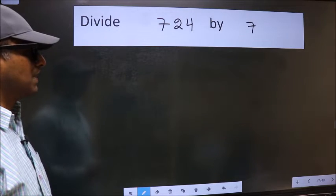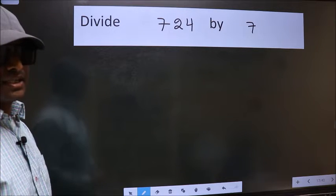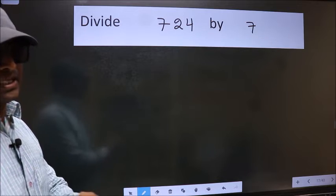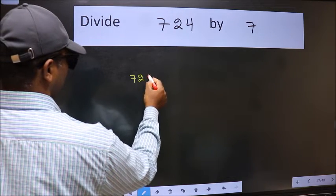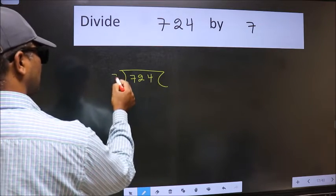Divide 724 by 7. To do this division, we should frame it in this way. 724 here and 7 here.